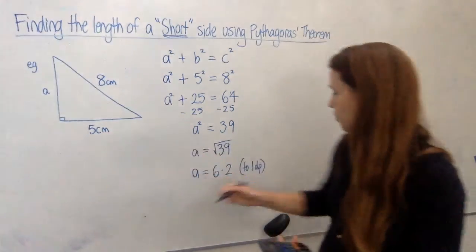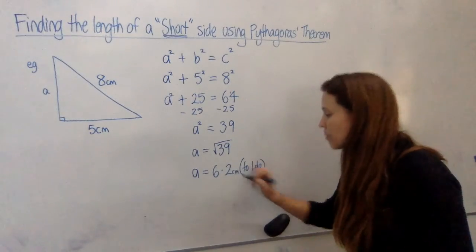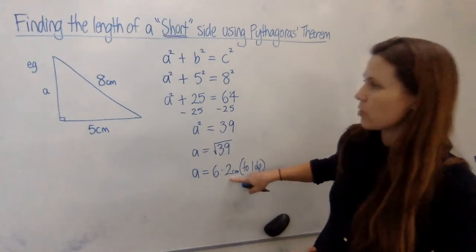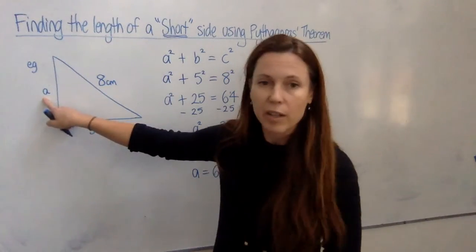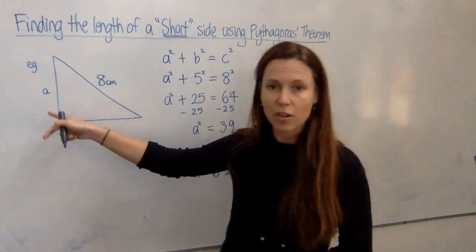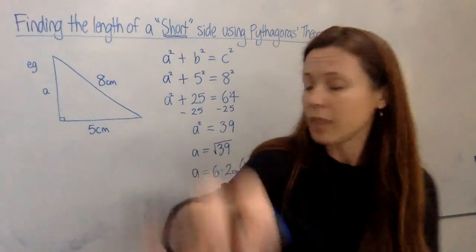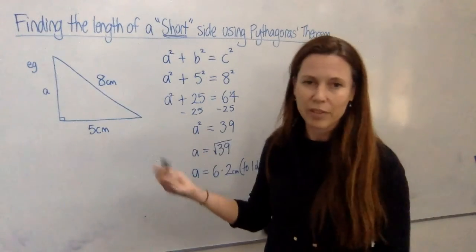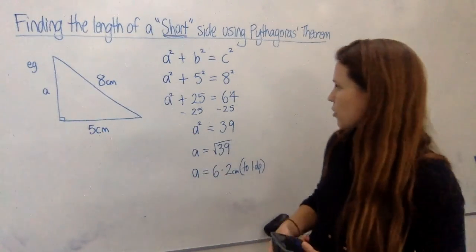Now we've rounded it off, so we need to say what we rounded it off to, and we need to put some units in here too. 6.2 what? 6.2 centimeters. Now last step, as always, take your 6.2 centimeters, bring it back to your picture and ask yourself: does it make sense? Because if you've done something wrong, it'll be wrong by a lot and it'll be really obvious. And 6.2 looks pretty good here. I'm quite happy with that, even though my drawing's not perfectly to scale.